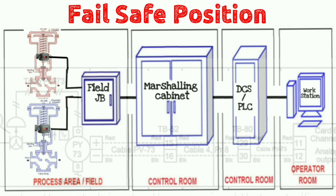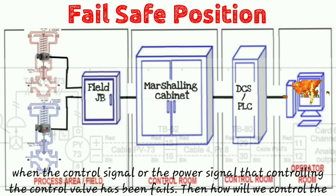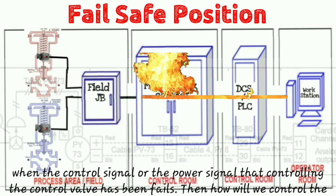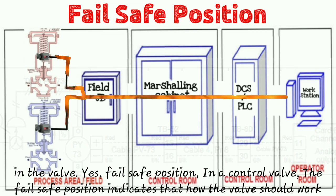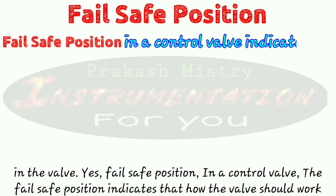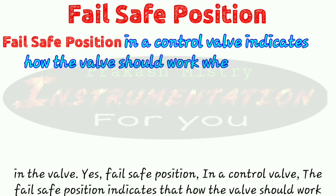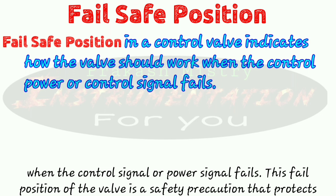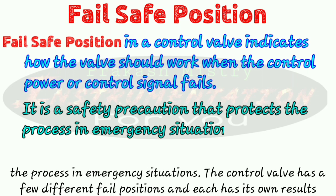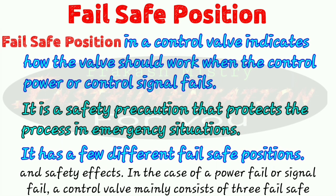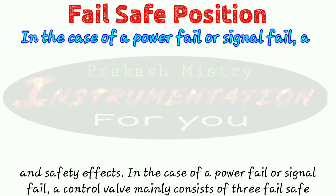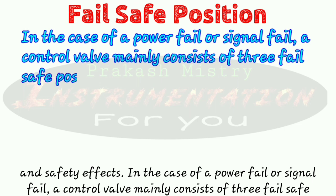But imagine what will happen when the control signal or power signal controlling the control valve fails. How will we control the process? How will we keep the plant in safe condition? That's why it is so important to choose the correct fail-safe position in the control valve. The fail-safe position indicates how the valve should work when the control signal or power signal fails. This fail-safe position is a safety precaution that protects the process in an emergency situation. In the case of power fail or signal fail, a control valve mainly consists of three fail-safe positions.